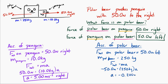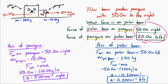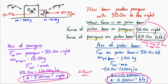So we have the same amount of force applied to both the penguin and the polar bear, but they have different masses and so they respond to that force in different ways. The penguin has less mass, so it has a greater acceleration. The polar bear has more mass, so it has a smaller acceleration.